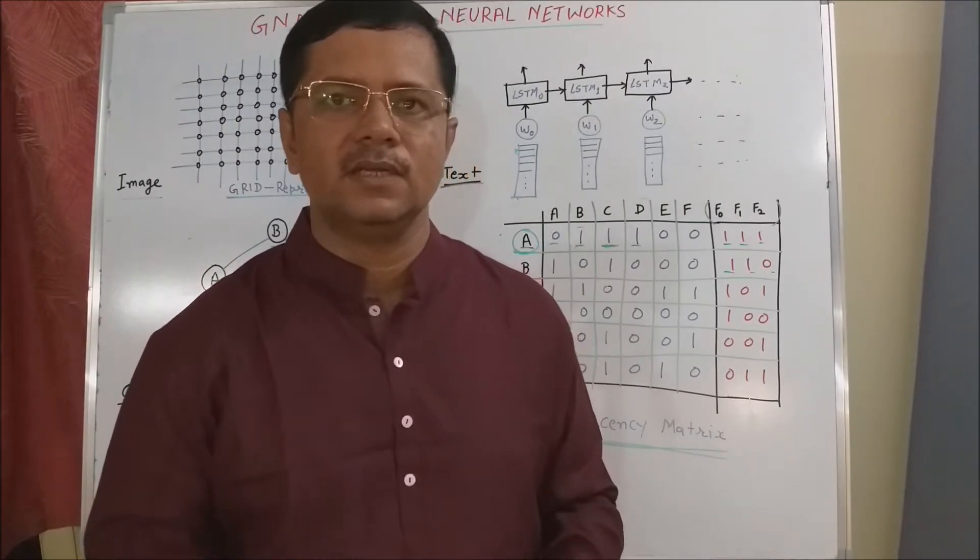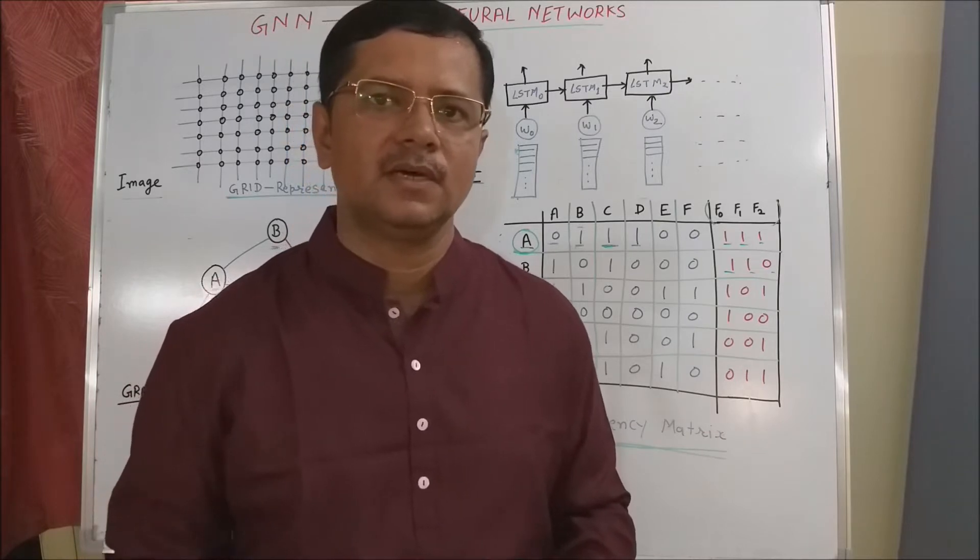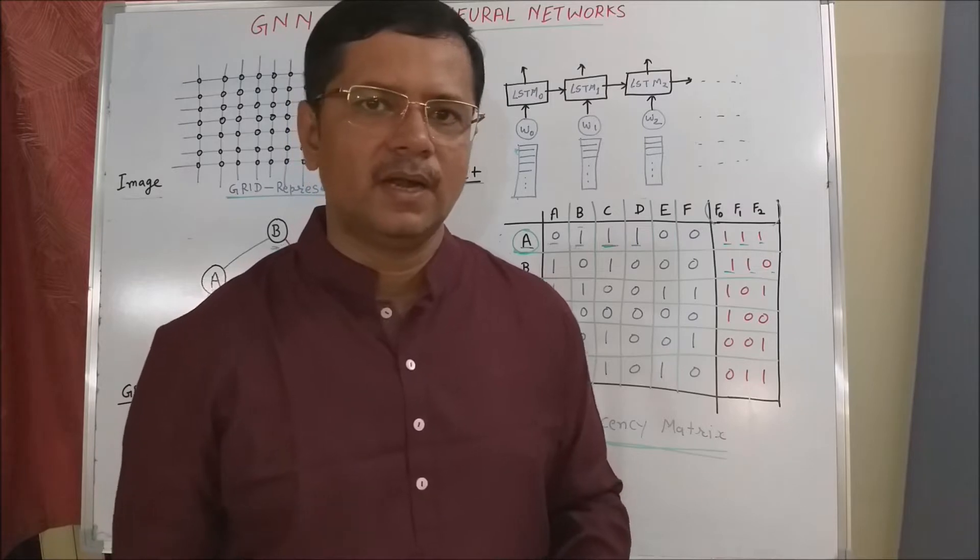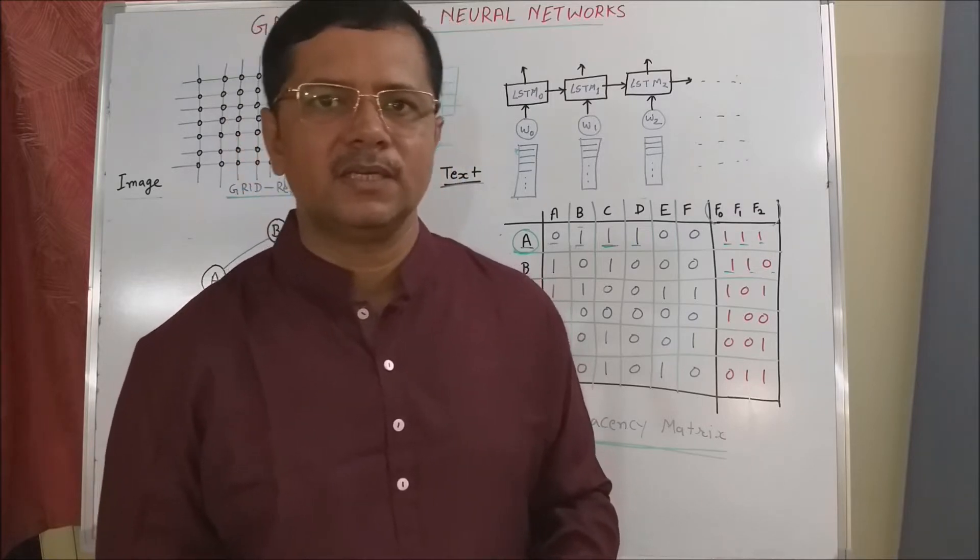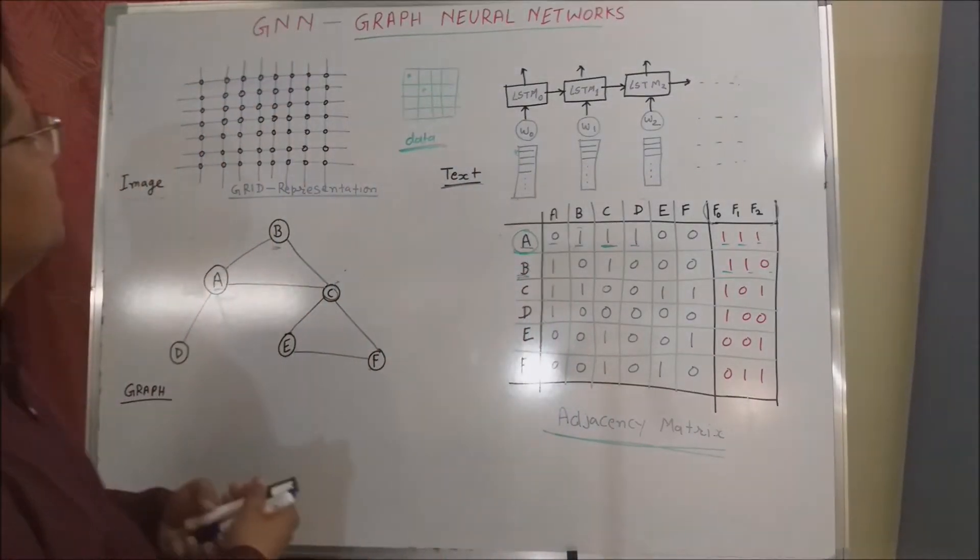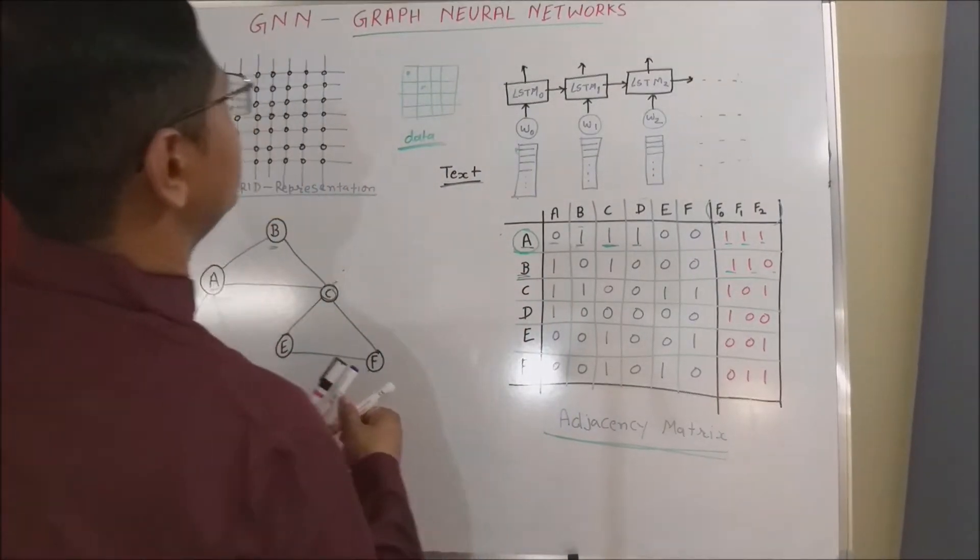This is the first part of this tutorial. In the second part, I will try to explain the graph convolutional neural network architecture. And in the third part, I will try to explain the text-based graph neural network architecture. So, let us try to understand the first part, graph neural network architecture.